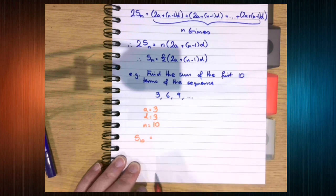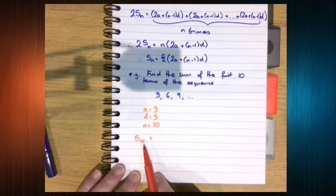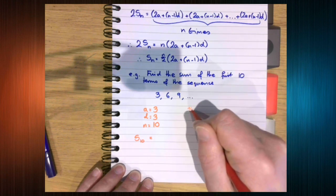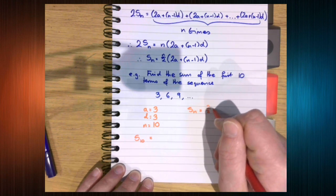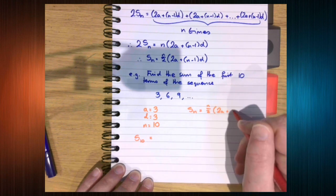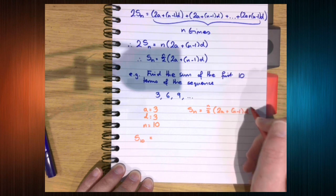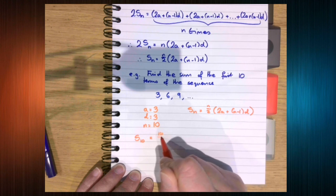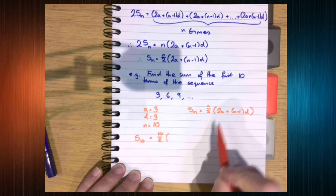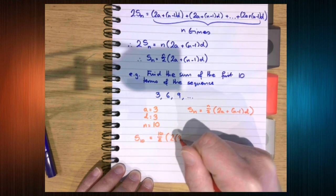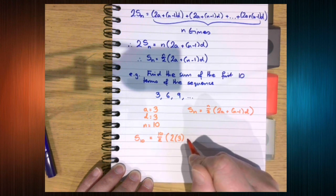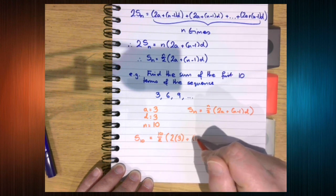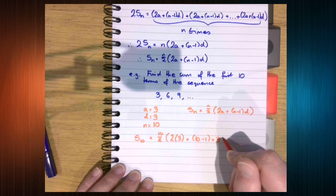So the sum of the first ten terms S10, let's just write the formula out just to be safe. 10 over 2 times 2 times a plus n minus 1 times d.